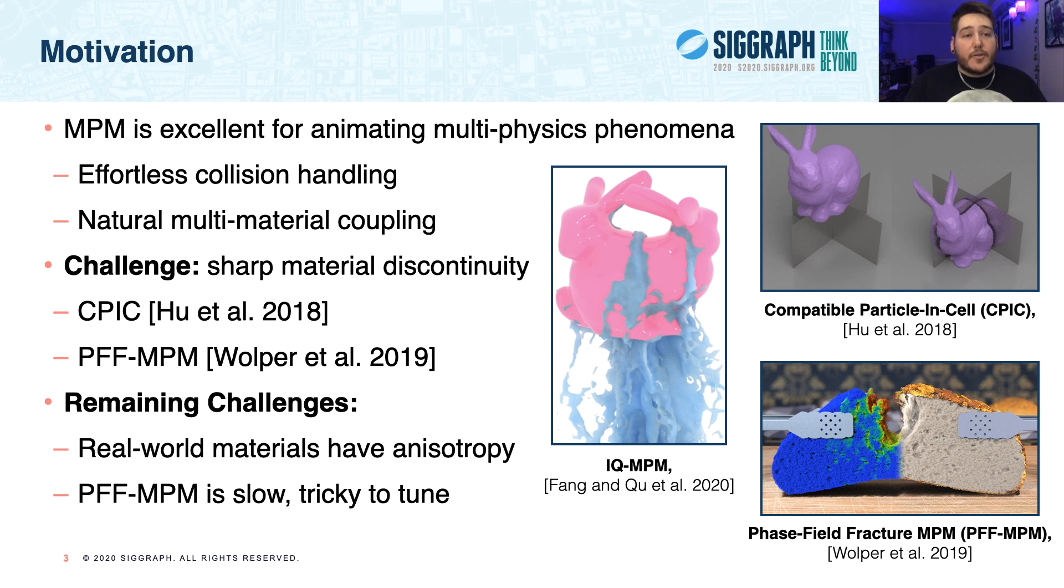However, due to MPM's dependence on spatial interpolation routines, it struggles with material effects such as fracture that introduce sharp topological discontinuities. Recent approaches such as CPIC enabled cutting within MPM, but this is purely geometric with no physics behind it. Conversely, last year we introduced PFFMPM, an approach rooted in phase-field fracture with rigorous physics behind it.